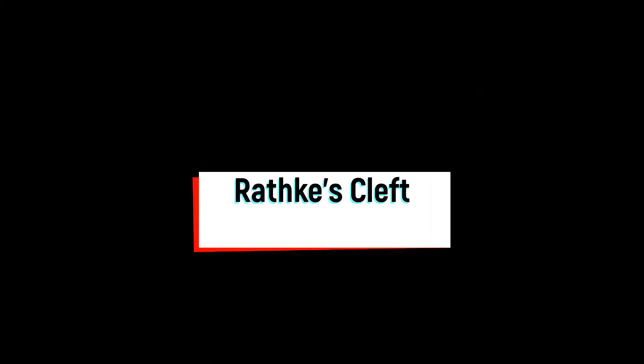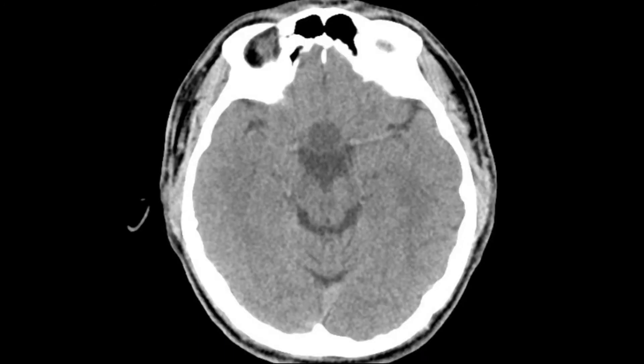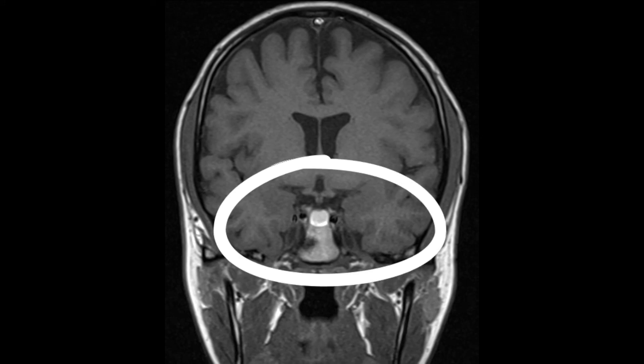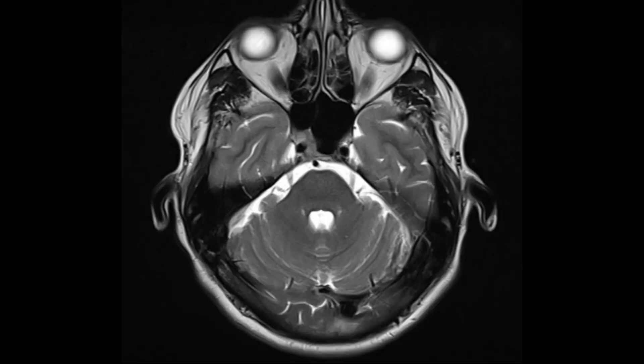Onto the last part of this video — Rathke's cleft cyst. It is non-neoplastic, usually an incidental finding in the sellar region. It occurs mainly in adults and has a female preponderance. If it becomes large, it will compress and cause symptoms like visual disturbances or headaches. Here you can see a CT with low enhancement of a cystic lesion. This is a T1-weighted MRI sagittal view, a T1 coronal view, and a T2 axial view of the Rathke's cleft cyst.